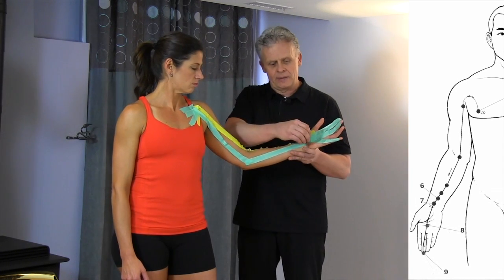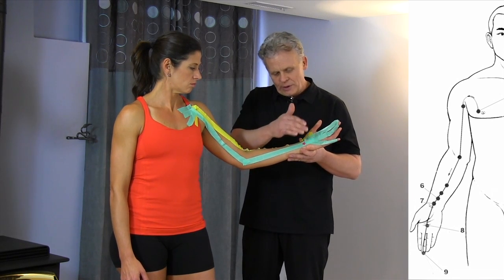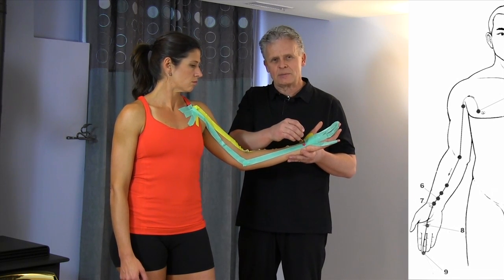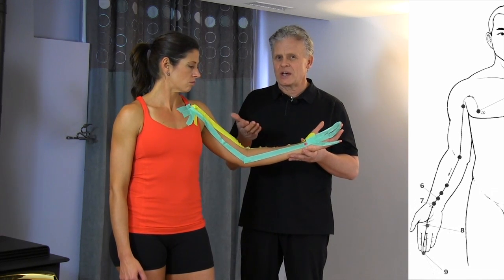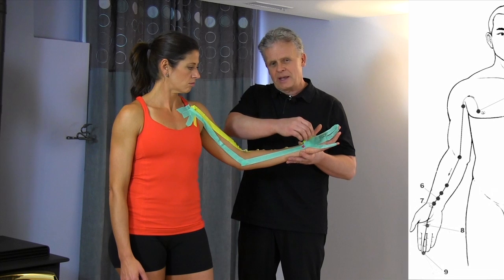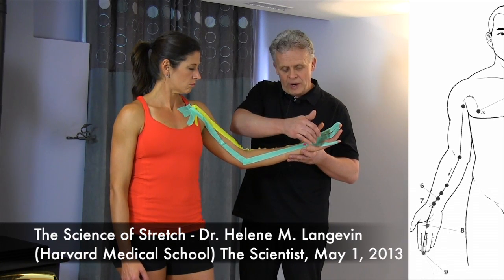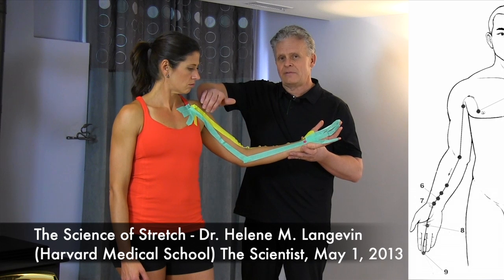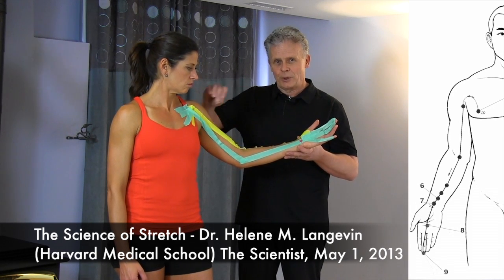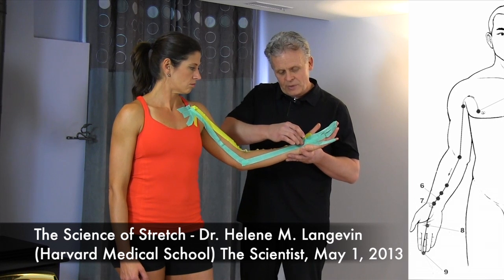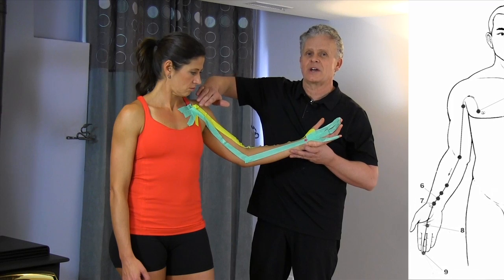When you do acupuncture, you put a needle in and you twist it, creating a torque. Some research at Harvard University has shown that by maintaining a stretch on that needle — which you do when you twist it — you create an effect down the entire plane of fascia, a neurological plane in addition to a fascial plane. So if we work something down here at the wrist, such as pericardium 7, we're actually affecting everything along the entire track.